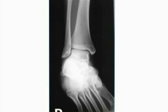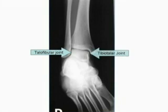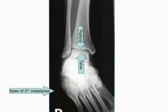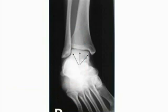The AP medial oblique or mortise view ankle should demonstrate the talofibular joint, the tibiotalar joint, plafond, and talus. The base of the fifth metatarsal is also demonstrated. The appropriate contrast and density will demonstrate both soft tissue and trabecular of the bone.